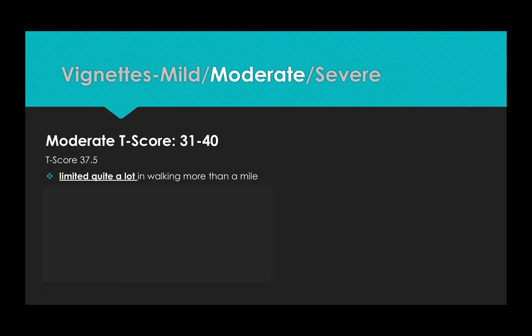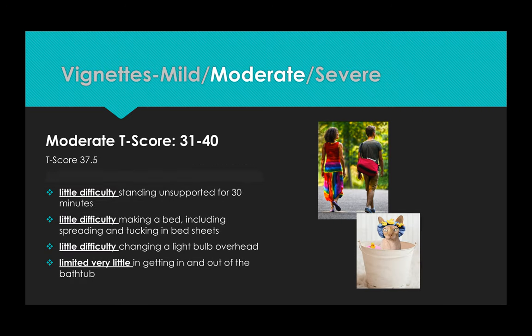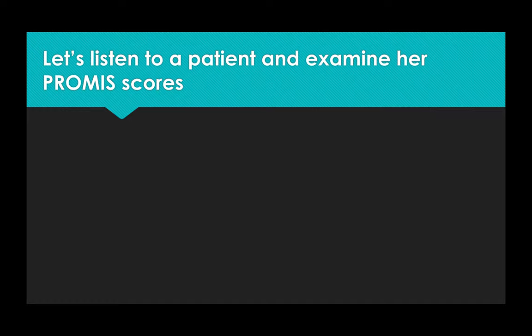Let's examine the moderate range of limitations in physical function. This is associated with a T-score of 37.5. The person might be limited quite a lot in walking more than a mile. But have little difficulty or very limited difficulty with making a bed, changing a light bulb, or getting in and out of bed. So, now let's listen to a patient in the moderate range of physical limitations. And then examine her PROMIS scores.